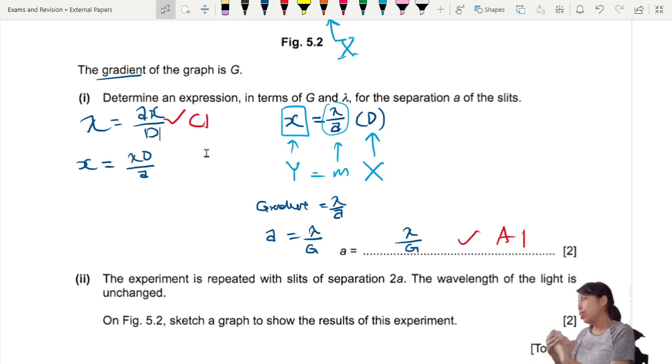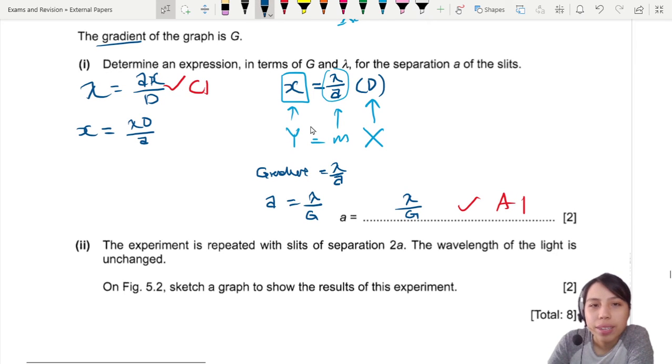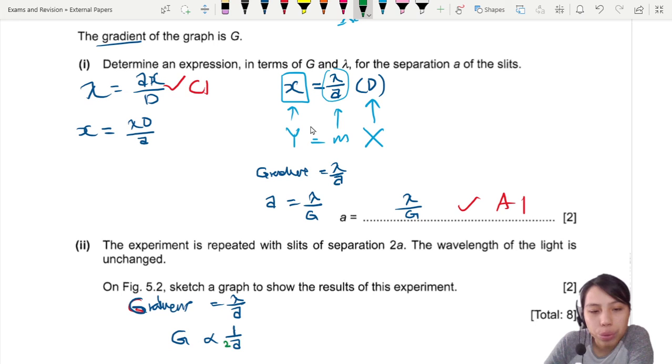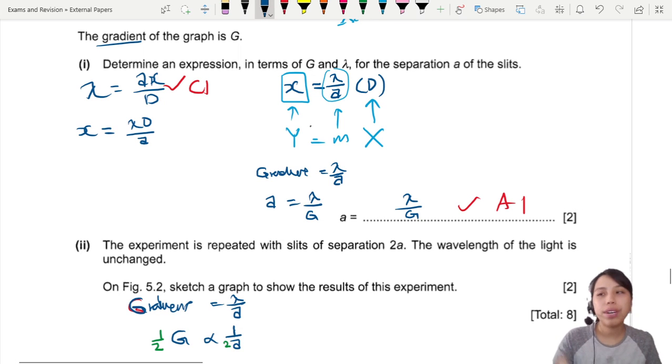The slit separation increased to 2a. What does that affect? Look back at our equation: it affects the gradient. Since gradient is lambda over a, gradient is proportional to 1 over a. So your separation of slit becomes 2a, two times, so this one in proportion will also change by that amount: half. We need to draw half the gradient on our graph.